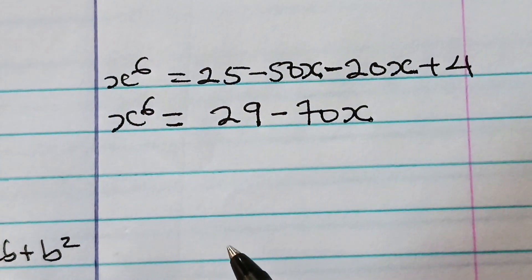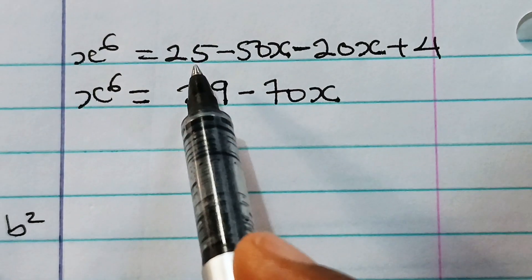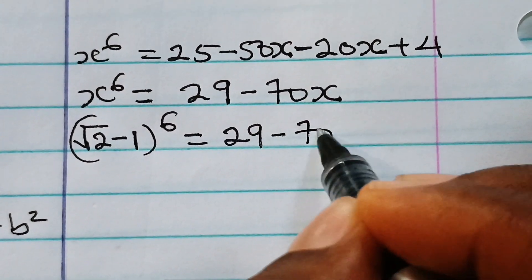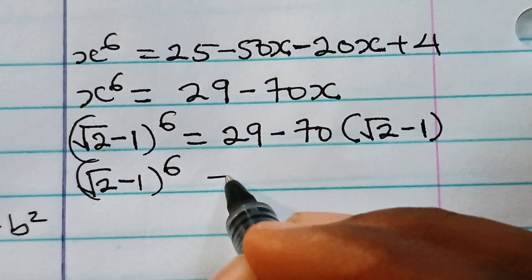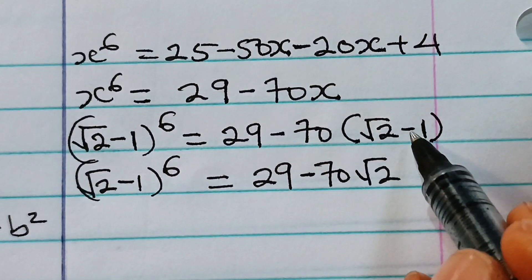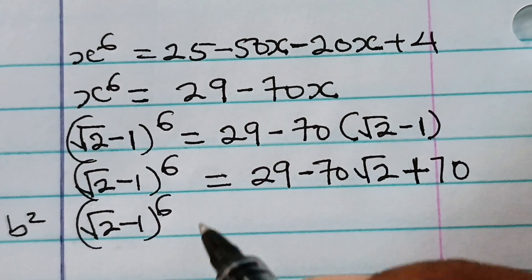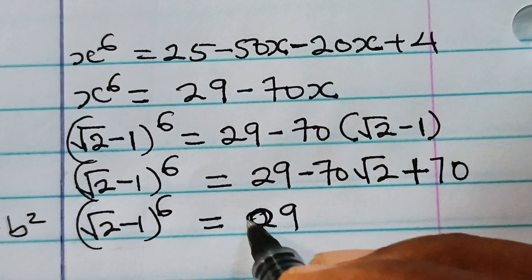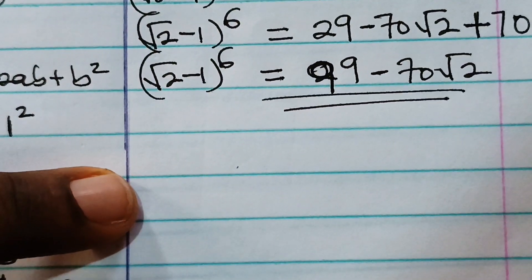Now recall that square root of 2 minus 1 is equal to x. So we substitute: square root of 2 minus 1 raised to the power of 6 is equal to 29 minus 70 times bracket square root of 2 minus 1. Expanding: 29 minus 70 root 2 plus 70. So square root of 2 minus 1 to the power of 6 equals 29 plus 70, which gives us 99, minus 70 root 2. So the final answer is 99 minus 70 root 2. Thank you so much for watching.